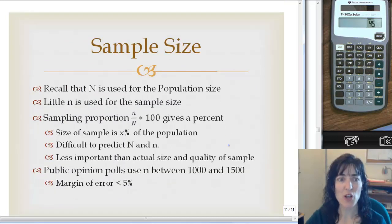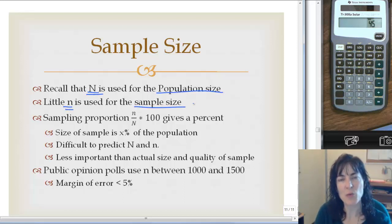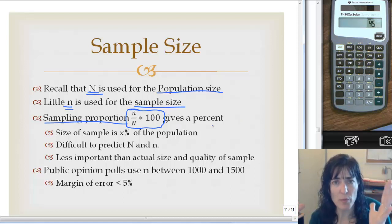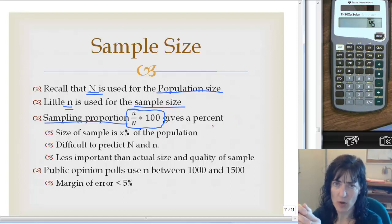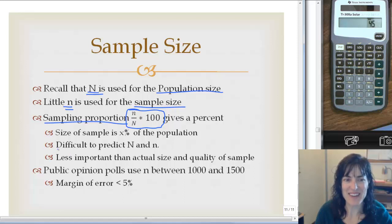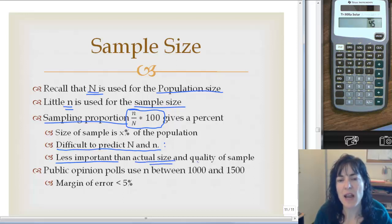Let's talk about sample size. We use big N for the population size and little n for the sample size — the same variable, one uppercase and one lowercase. We can use a sampling proportion by taking little n divided by big N and multiplying by 100, which tells you what percent your sample is of your population. Sometimes we can't tell what our little n or big N is, and I like to ask you that on tests. We don't use the sampling proportion that much, because it's more important to know the actual size and how you chose your sample.